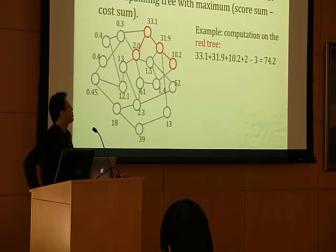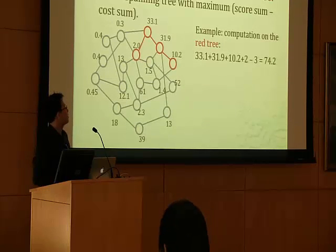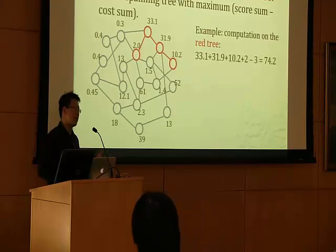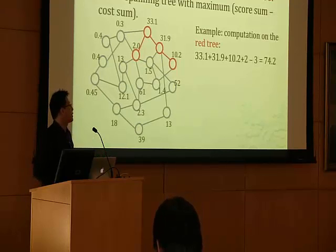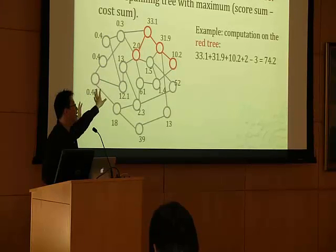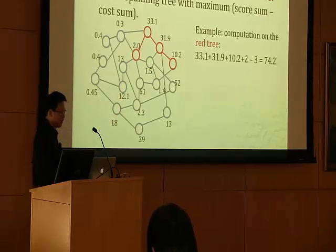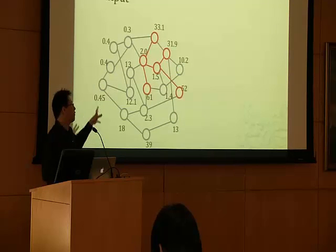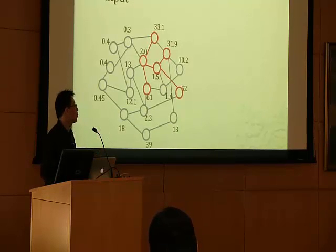In the final step, the algorithm solves a problem called the prize-collecting Steiner tree problem. The goal is to find a subtree that maximizes the difference between the sum of numbers associated with nodes and the sum of numbers associated with edges. For the specific red subtree shown here, the score is computed by the formula shown on the right. After finding the optimal subtree, we output the set of nodes in this subtree as the detected community.